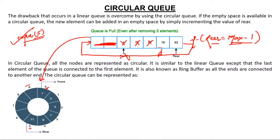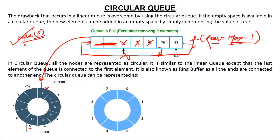Suppose you have a queue here with elements 5, 9, 10, 12, 15, 6, and 3. So front is 0 and rear is 6. Now you deleted two elements — 5 and 9 — so front moves. When we delete, we delete from front; when we insert, we insert from rear. Now I want to insert 17. I will insert it over here. So will I simply increment rear = rear + 1? No — absolutely wrong in some cases.